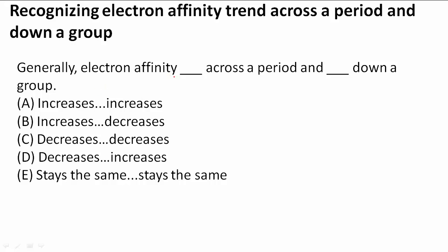So they want to know if it increases across a period, increases or decreases, stays the same, or here does it increase, decrease, or stay the same down a group. So we have these options and each one refers to each blank respectively.